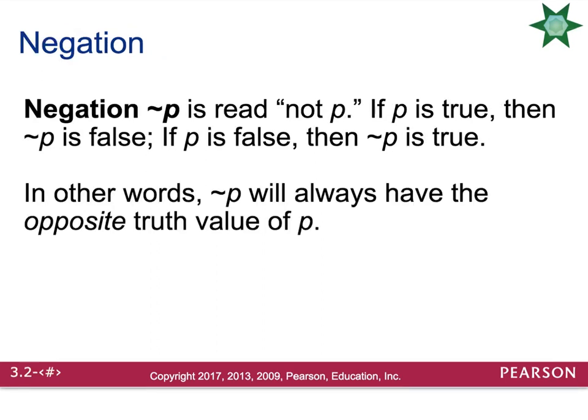The first thing you're going to deal with is the negation. Remember, the negation is read as 'not P.' When dealing with the negation, if the P statement is true, then the negation of that statement will be false. If the P statement is false, then the negation of that statement is true. The negation of P will always have the opposite truth value of regular P. For example, if I said 'Disney World is in Florida,' that's my statement P — that statement is true. So the negation of P, 'Disney World is not in Florida,' would be false.